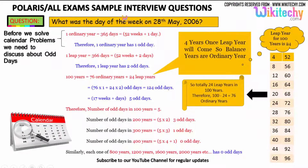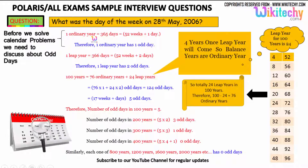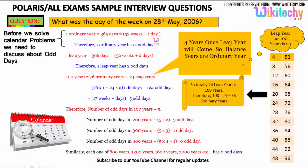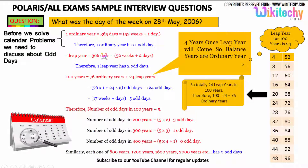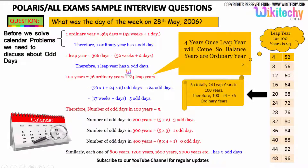Before finding the answer, you should understand the basics of weeks and years. An ordinary year has 365 days, which is 52 weeks and 1 odd day. For a leap year, you have 366 days, so 52 weeks and 2 odd days. So one ordinary year has 1 odd day and one leap year has 2 odd days.